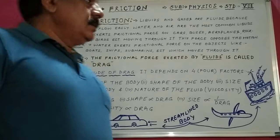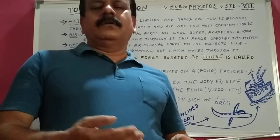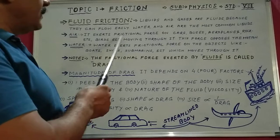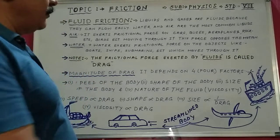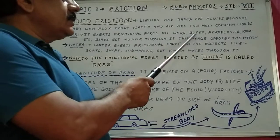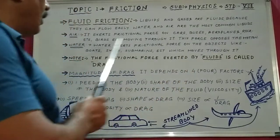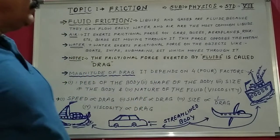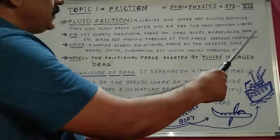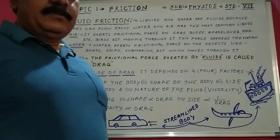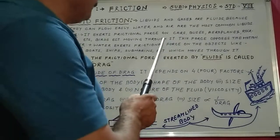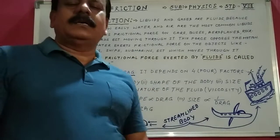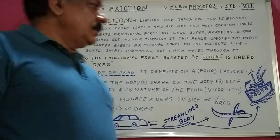Now we will see how water and air exert pressure on moving objects. Number one: air. Air exerts frictional force on moving cars, moving buses, moving aeroplanes, moving rockets, flying boards, etc. All are moving through it, so the frictional force exerted by air on all these objects is known as fluid friction. This force opposes the motion of all these moving objects.